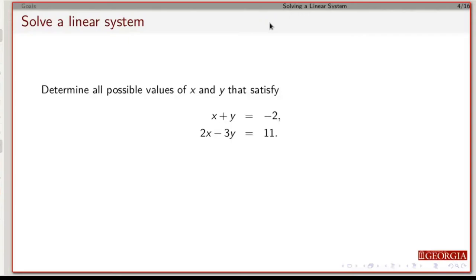So let's look at an example. Suppose we've got this system of equations: x plus y equals minus 2, and 2x minus 3y equals 11. We want to find all values of x and y that satisfy both equations.